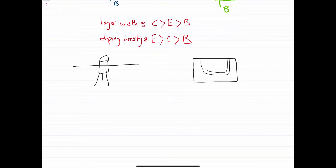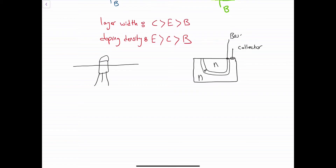Let's follow: N, P, N. This is the collector. This pin is the base.